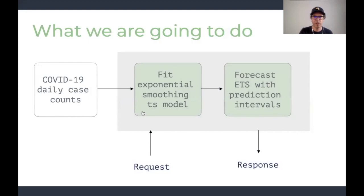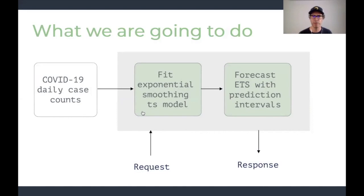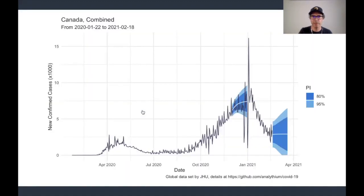Let's outline what function we are going to build. The function takes some request parameters, retrieves data from an API containing daily COVID-19 case counts based on the Johns Hopkins University global dataset, fits an exponential smoothing time series model to these observations, makes a forecast, and sends the response containing expected values and prediction intervals around them. This is what the observed case counts look like for Canada, with white lines and blue ribbons indicating forecasts done with two different subsets of the data.